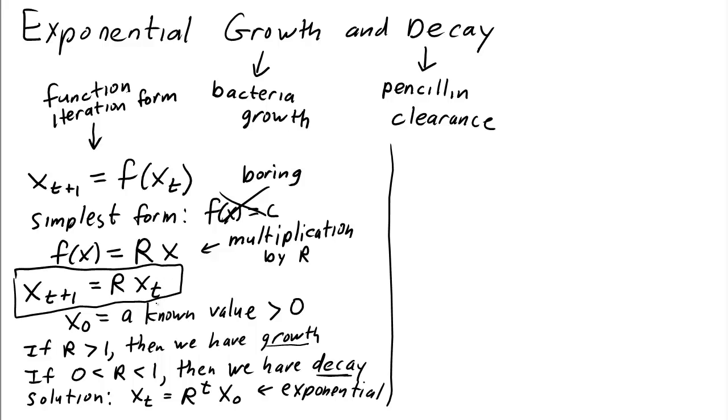Now here's where people often get confused. We have two ways that we sometimes write down a discrete dynamical system. One is this function iteration form. We can also write a discrete dynamical system in difference form. Difference form focuses on the change from time t to time t+1. So x_{t+1} minus x_t. This is change.